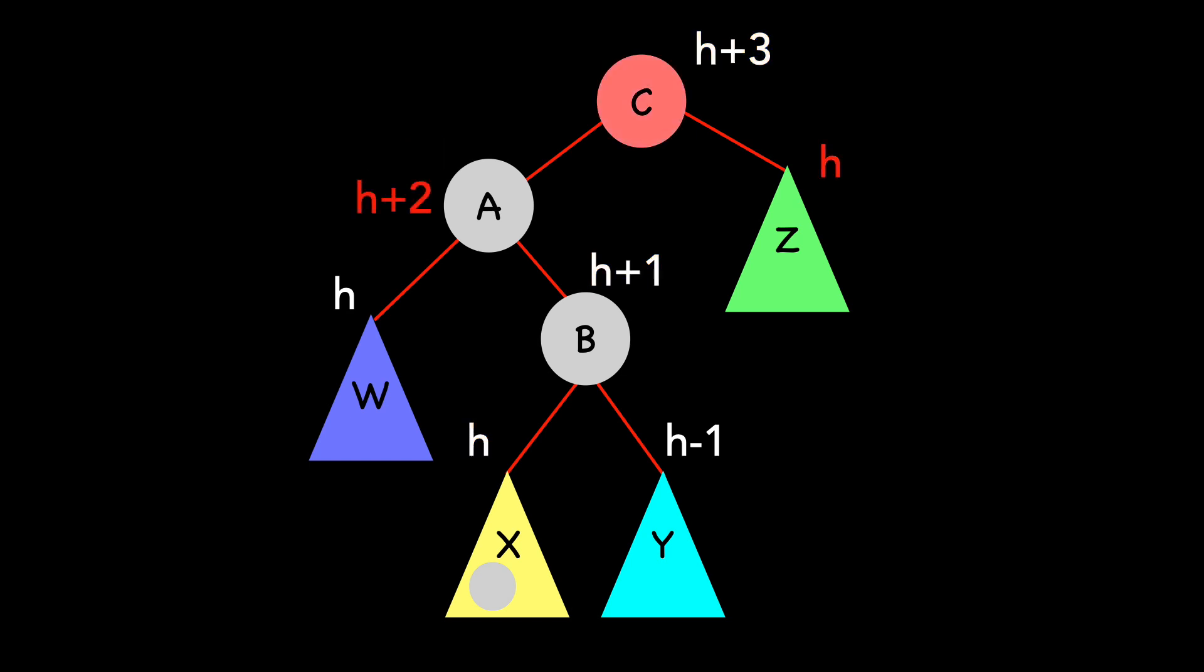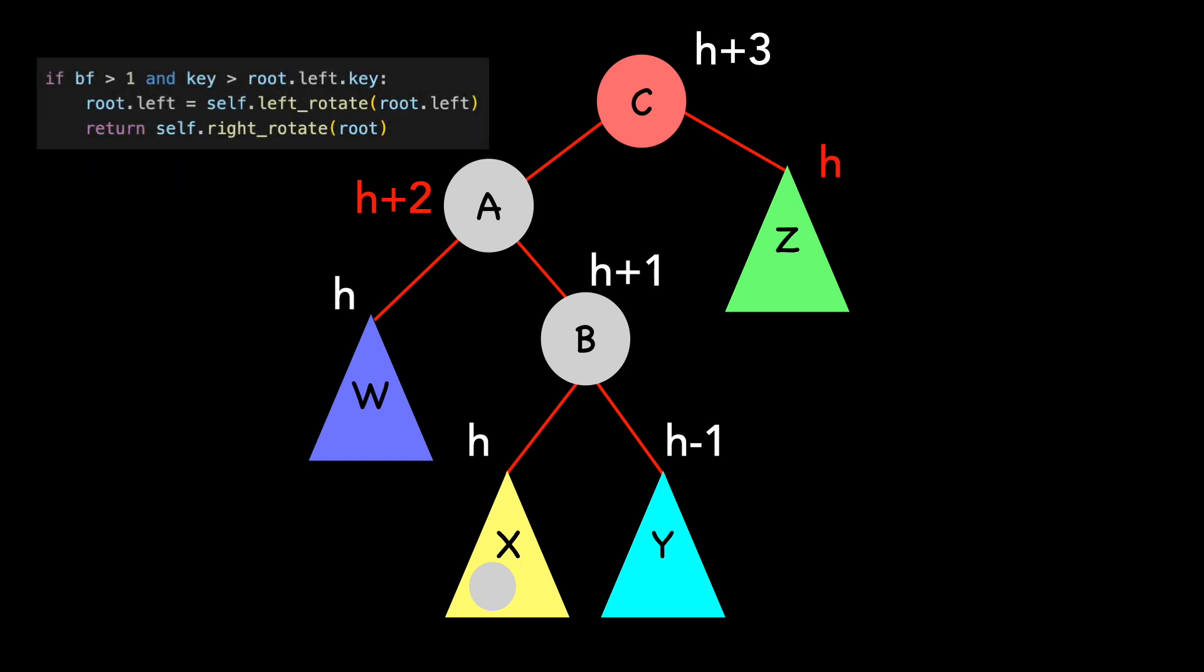We see that we have a violation with C's children, as the difference in height between A and Z is 2. This satisfies this if condition. Our balance factor is 2. We added the node in X, which is greater than A, C's left child. We'll fix this by a left rotation followed by a right rotation.